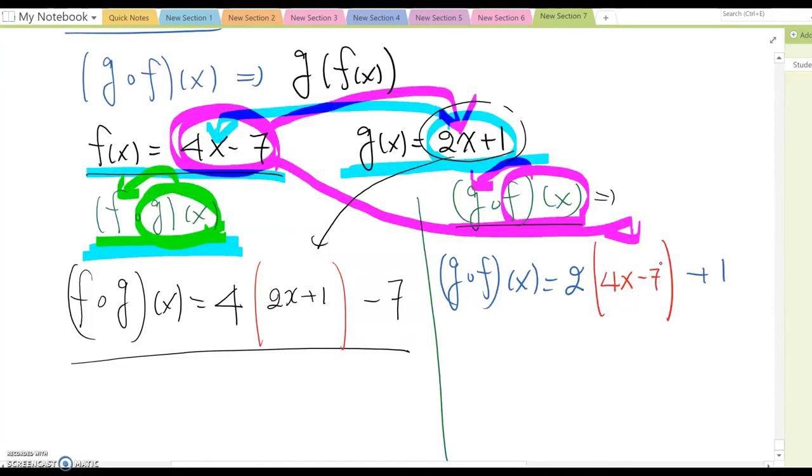So do you see the difference here? So f open dot g(x) means it follow f(x) function format. g open dot f(x) means it follows g(x) format. And then you are plugging g(x) into f and then f(x) into g. That's the difference here.